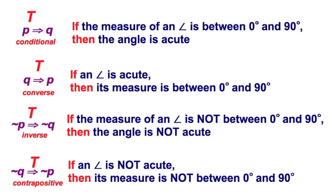This particular conditional statement happens to be a definition. And we're going to see later on in this text, any time we have a definition, they are reversible, which means this statement and this statement are both going to be true, and consequently all of them. But as you see, we're going to be mostly concerned with the conditional statement and the converse.